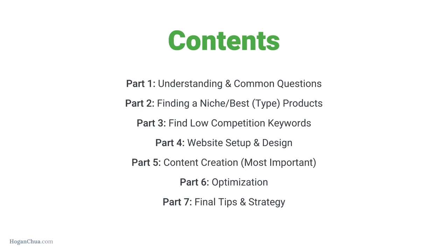Part five is content creation, which is probably the most important part of an affiliate marketing business. Part six is optimization — I'll show you the step-by-step process of optimizing your website so it ranks in Google, covering both on-page and off-page SEO. Part seven covers final tips and strategies to help you succeed quicker, including things that no one normally shows you. So grab a pen and paper, maybe get a coffee, and let's get started.